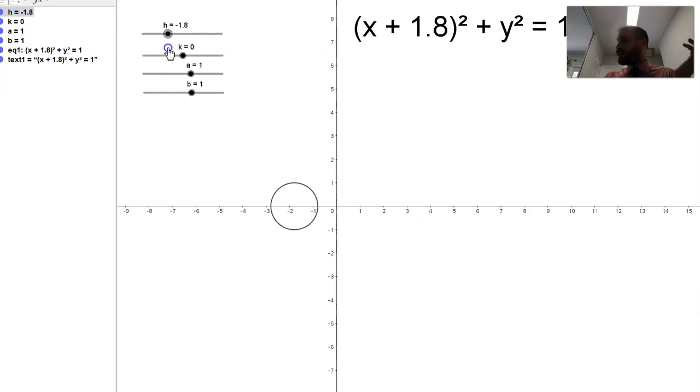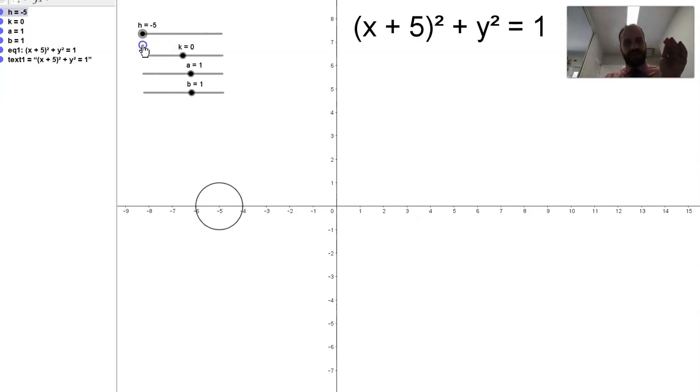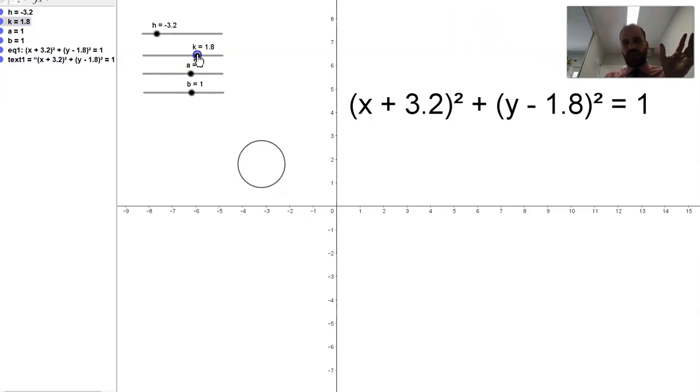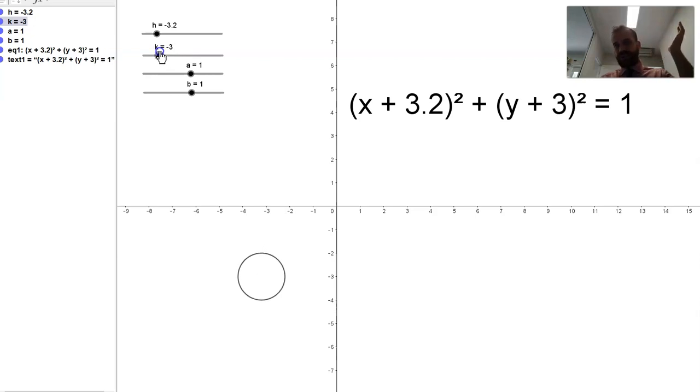If I move it the other way, you can see so x plus 5 squared, we end up in negative territory. We can do something similar with our k value here. If we get something like y minus 2 squared, you can see it moves up. That minus 2 is acting on that y, and it's moving us up. Similarly, we move back down again, and we get y plus 3 squared moves the center of our circle down there. So the center of our circle at the moment is negative 3.2, negative 3.